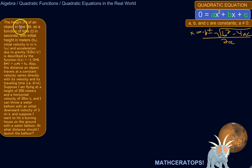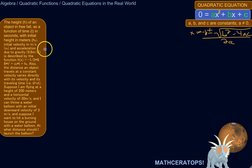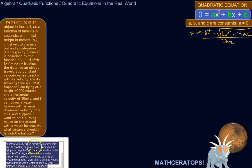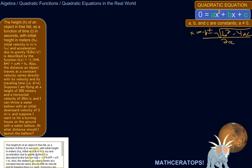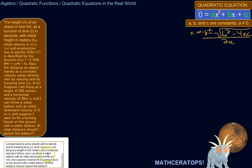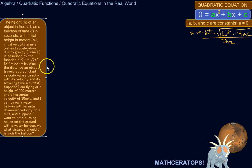The height of an object in free fall as a function of time in seconds, with its initial height in meters, initial velocity in meters per second, and acceleration due to gravity of 9.8 meters per second squared, is described by: h(t) equals negative one-half times 9.8 times t squared, plus the initial velocity times time, plus the initial height.